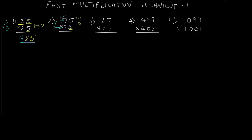We can apply the multiplication trick again. Take the multiplication of the units digits: 5 times 5 is 25 — write it as is. For the tens part, add 1 to the tens digit and multiply with the original: 7 times 8 gives us 56. So the final answer is 5625. Within seconds you can get your answers for these types of multiplications.